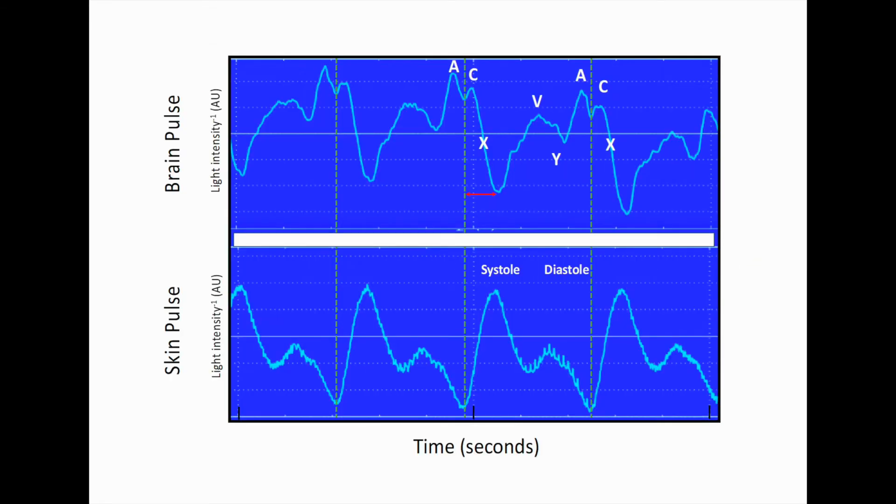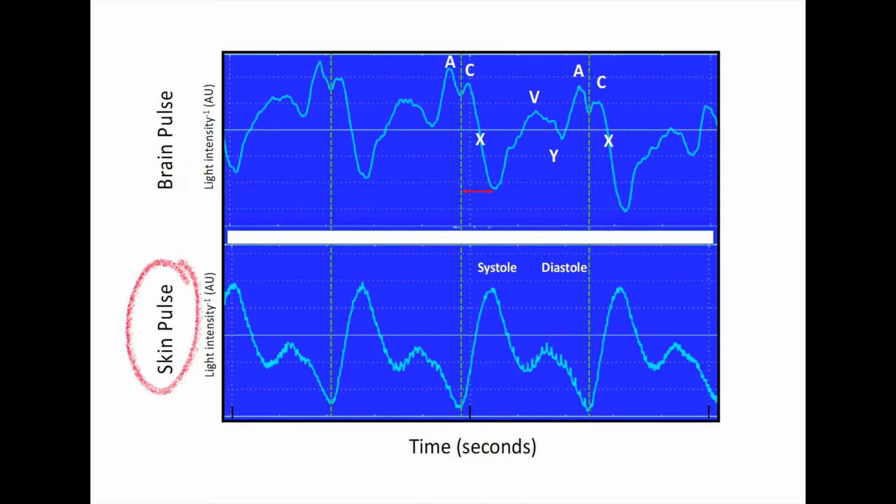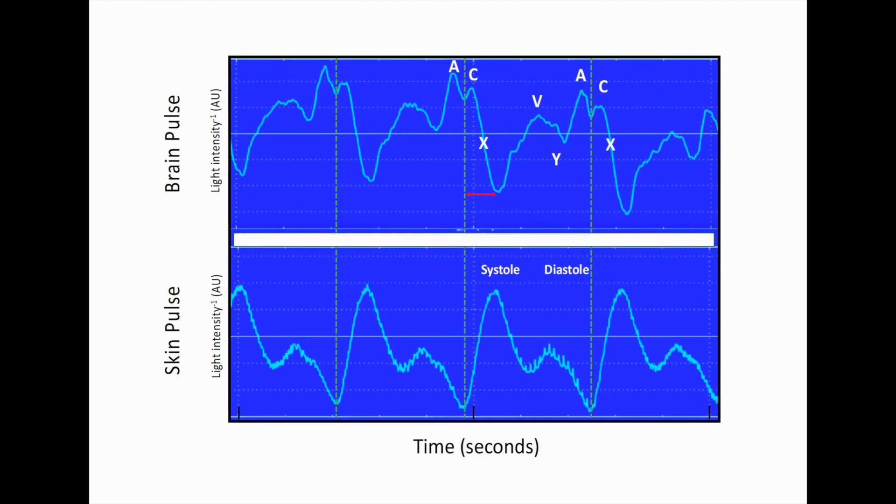This figure demonstrates a simultaneous recording of a normal brain waveform and the skin pulse waveform. As you can see, the shape of the brain pulse waveform is quite different to that of the skin. In fact, it is very much like a central venous pressure waveform with similar timing of the peaks and troughs.